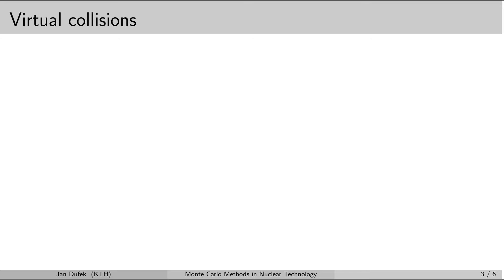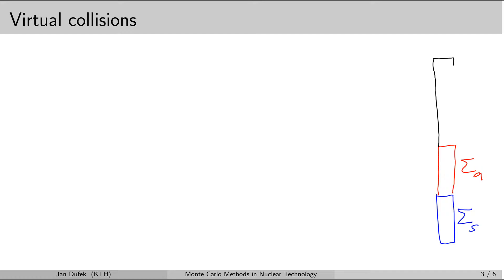Now we can assign a certain value of the virtual macroscopic collision cross-section for a specific material and look at what the impact will be on the neutron transport simulation. Let's assume that we have a material which has a certain value of the macroscopic cross-section for scattering, a cross-section for absorption (that is the capture and fission cross-sections together), and then we assign a very large macroscopic cross-section for the virtual collisions. Let's assume that this virtual cross-section is twice as big as the macroscopic cross-section for absorption and scattering, so that the virtual cross-section creates 50% of the total macroscopic cross-section.